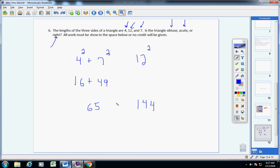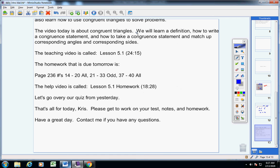Now, we know 65 is what? Less than 144. So, we know this triangle is obtuse. I hope that helps, Chris. All right. Let's finish this up. That's all for today, Chris. Please get to work on your test notes and homework. Have a great day. Contact me if you have any questions. Thank you.